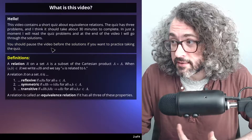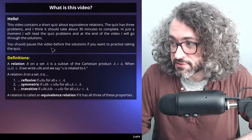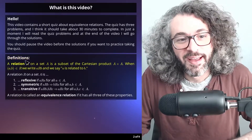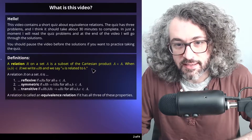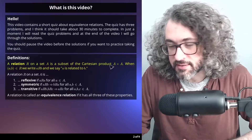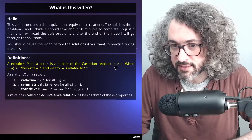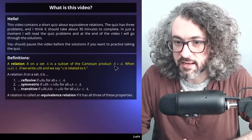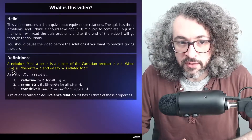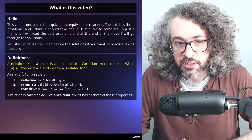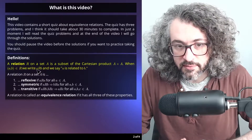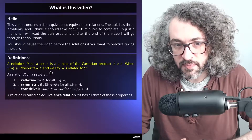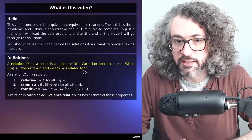This is a practice quiz about equivalence relations, so I should say what those are. A relation R on a set A is a subset of the Cartesian product A cross A — that's the set of all ordered pairs where both entries come from the set A. When the ordered pair (a, b) is in the relation R, we write it with the relation symbol between a and b, and we say a is related to b.